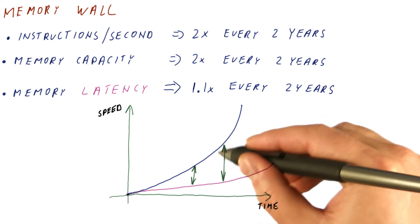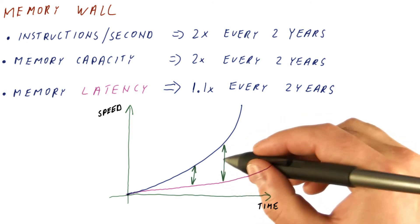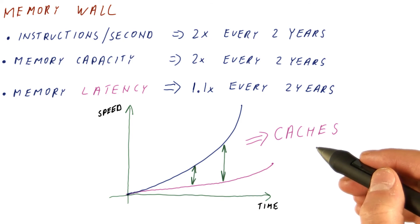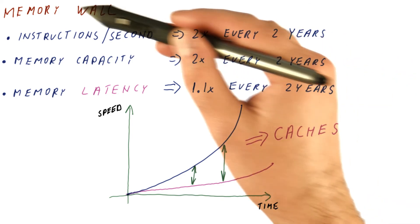And because this difference in speed has been growing very quickly over many years, we have been using caches as a sort of stairs for the memory wall.